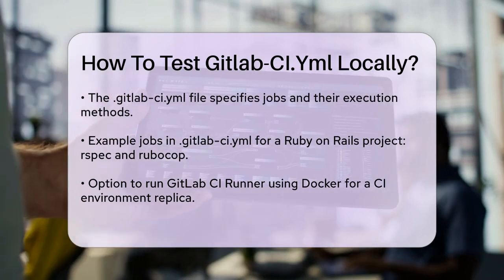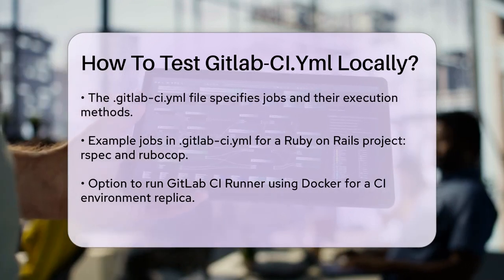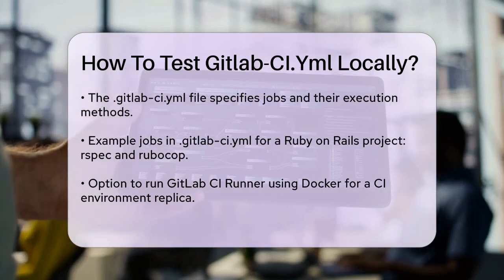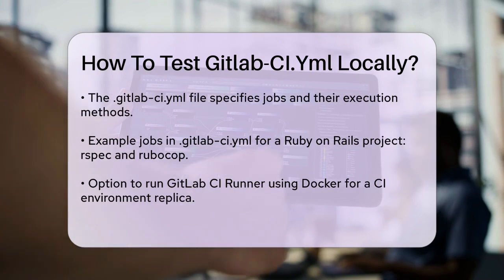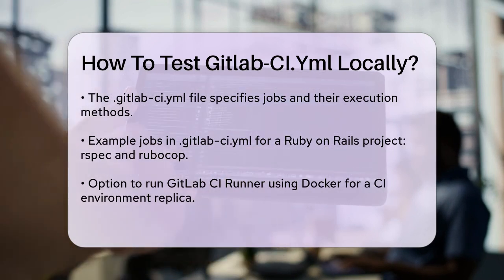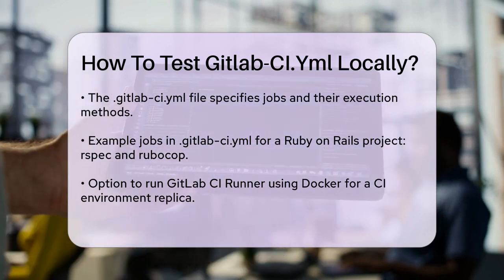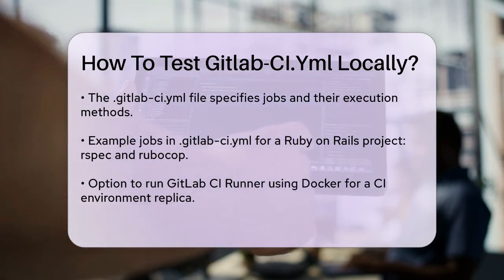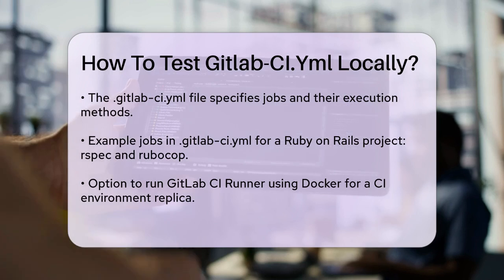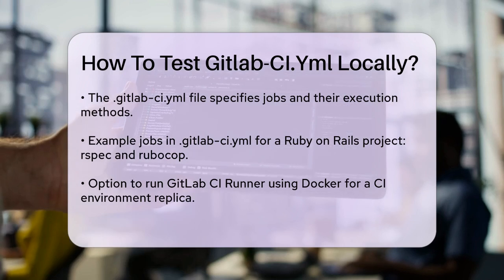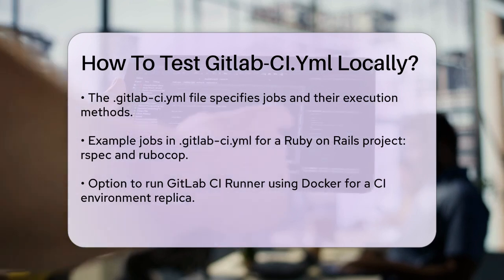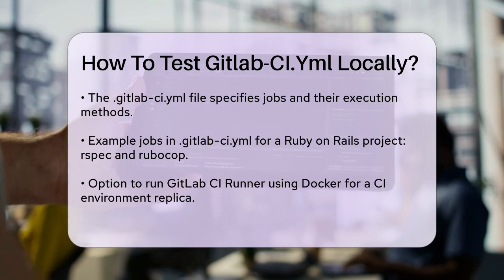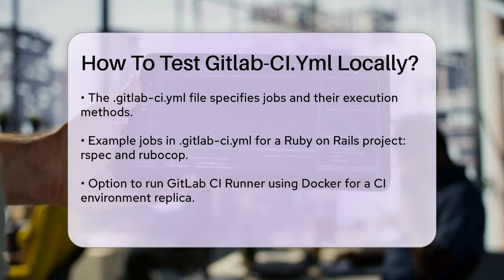Here's a simple example of what this file might look like for a Ruby on Rails project: rspec with script bundle exec rspec, and rubocop with script bundle exec rubocop. In this example, the rspec and rubocop jobs are defined with specific commands to execute.